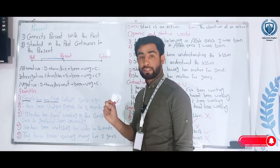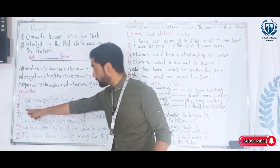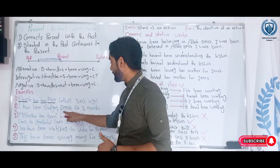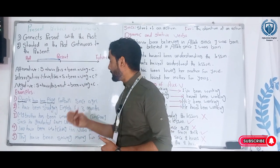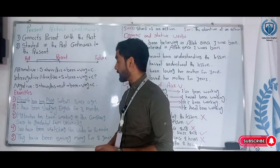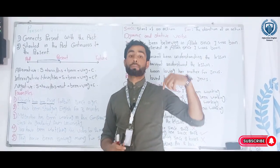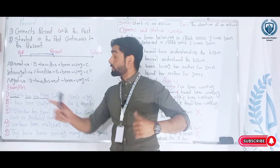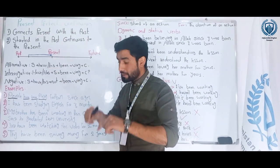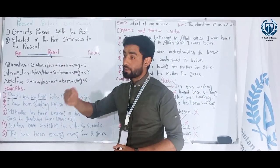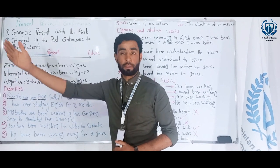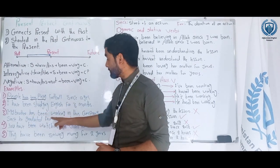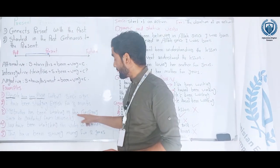The second sentence: 'I have been studying English for three months.' We have the subject 'I,' then auxiliary 'have,' then 'been,' then 'studying,' then the complement. It means my action started three months ago, is still going on, and may continue a little more in the future. The third sentence: 'My brother has been working in this company since he graduated from university.'